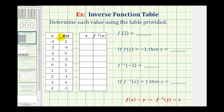We're going to use the table of values for f of x to determine the values here on the right. Remember the x values are the inputs and the function values or y values are the outputs. So to evaluate f of two, we need to recognize that this two here is the input into the function f or the x value for function f. So if we go to the table and look for the input of two or the x value of two, notice how the output is negative one. Therefore, f of two is equal to negative one.